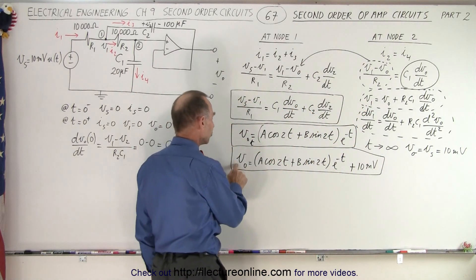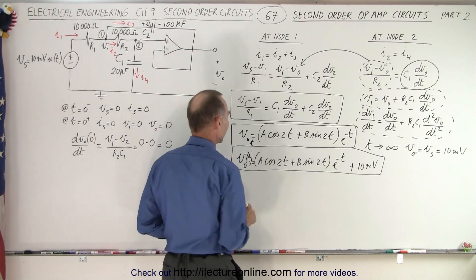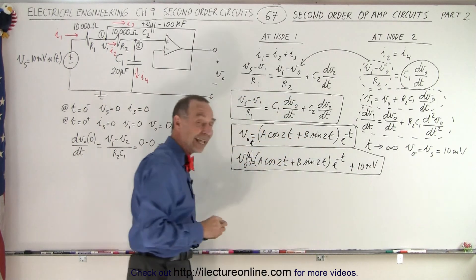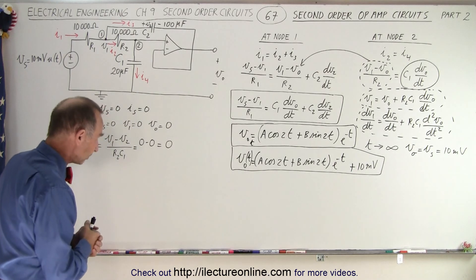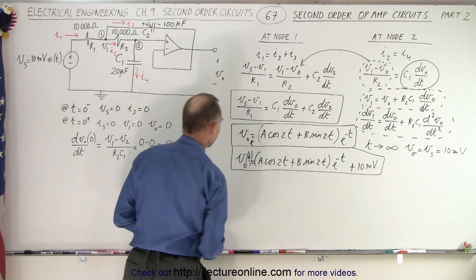So to get the voltage equation as a function of time, we add the 10 millivolts as the steady state voltage of the output voltage. Now, we still need to determine what A and B is equal to.